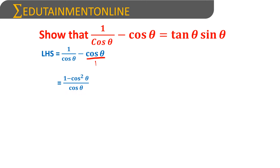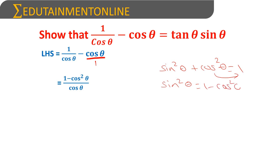We have a trigonometric identity which is sin²θ + cos²θ = 1. From that, sin²θ equals 1 − cos²θ by transposing cos²θ. So in place of 1 − cos²θ, we can write sin²θ. We will replace the numerator with sin²θ.